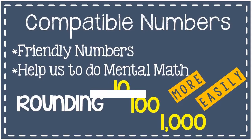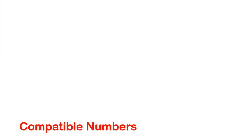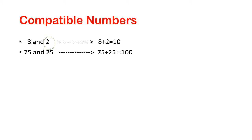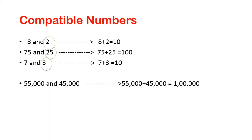Compatible numbers are also known as friendly numbers. They help us to do mental math. Let's see some more examples. When rounding off 8 to the nearest 10, we add 2: 8 plus 2 equals 10, so 2 is the compatible number. When rounding off 75, we add 25, so 25 is the compatible number. When rounding off 7 to the nearest 10, we add 3, so 3 is the compatible number.